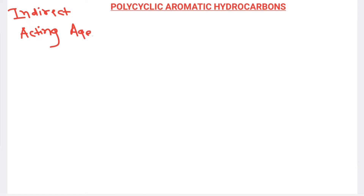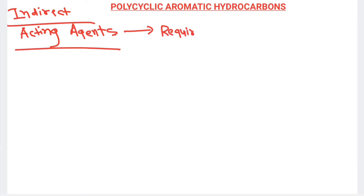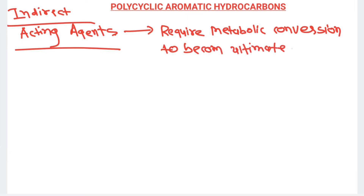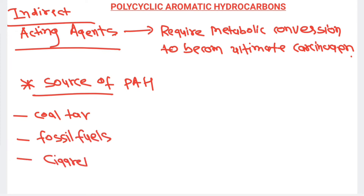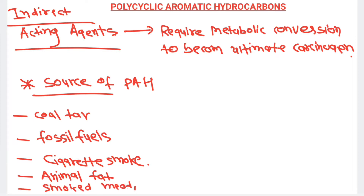Indirect acting pro-carcinogens require metabolic conversion to become the ultimate carcinogen. With metabolic conversion they convert into the ultimate carcinogen and then cause cancer. Sources of polycyclic aromatic hydrocarbons include fossil fuels, cigarette smoking, animal fat extraction, and smoked meat or smoked fish.